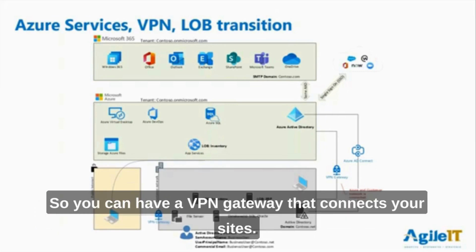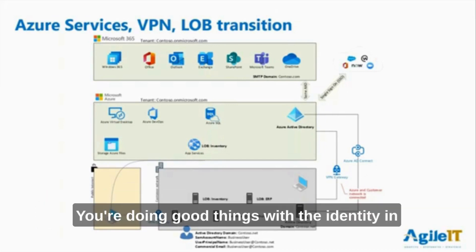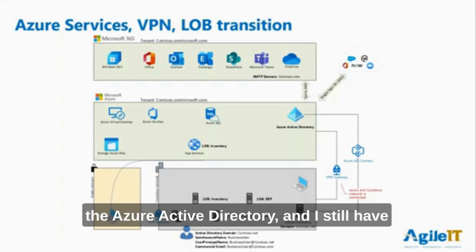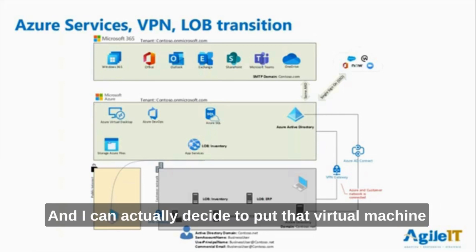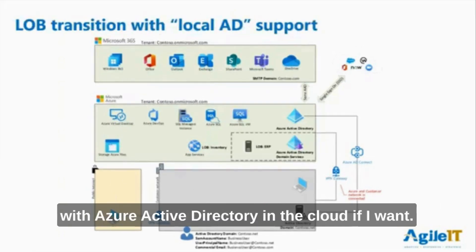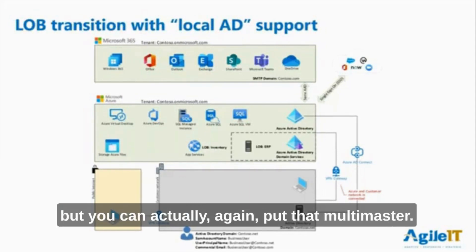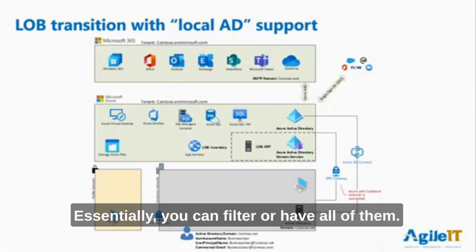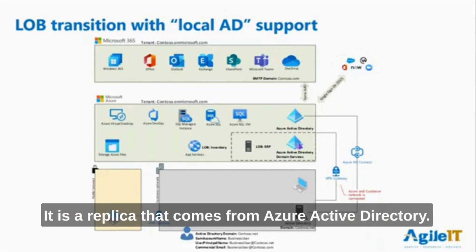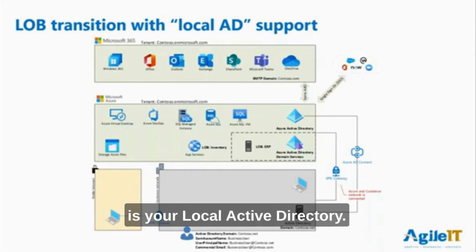You can have a VPN gateway connecting your sites, and you're doing good things with identity in Azure Active Directory. They may still have local Active Directory hanging around on-premises. You can actually put that virtual machine with Azure Active Directory in the cloud if you want. Azure Active Directory Domain Services is different - you can filter or include all of them. It is essentially a replica that comes from Azure Active Directory.